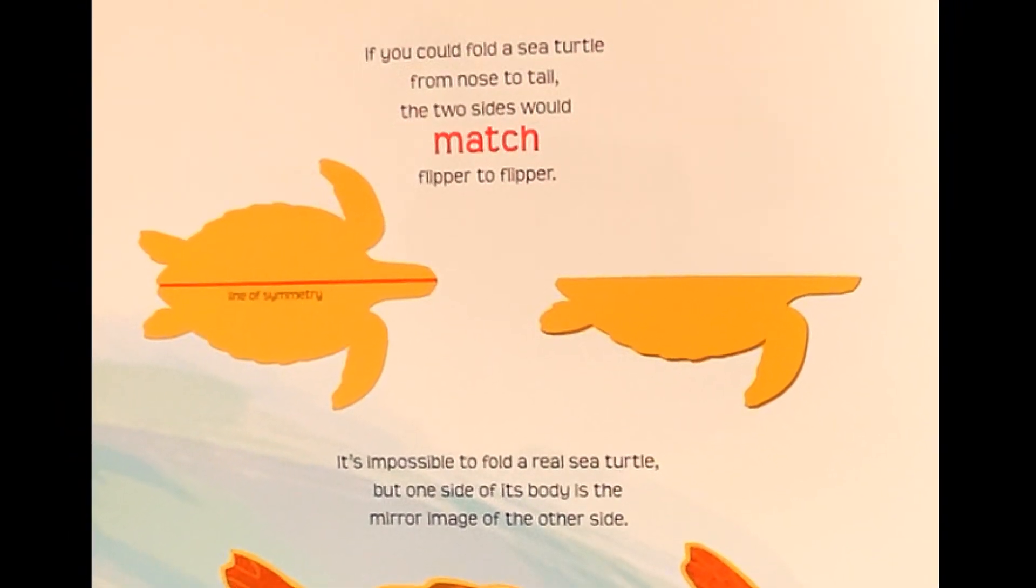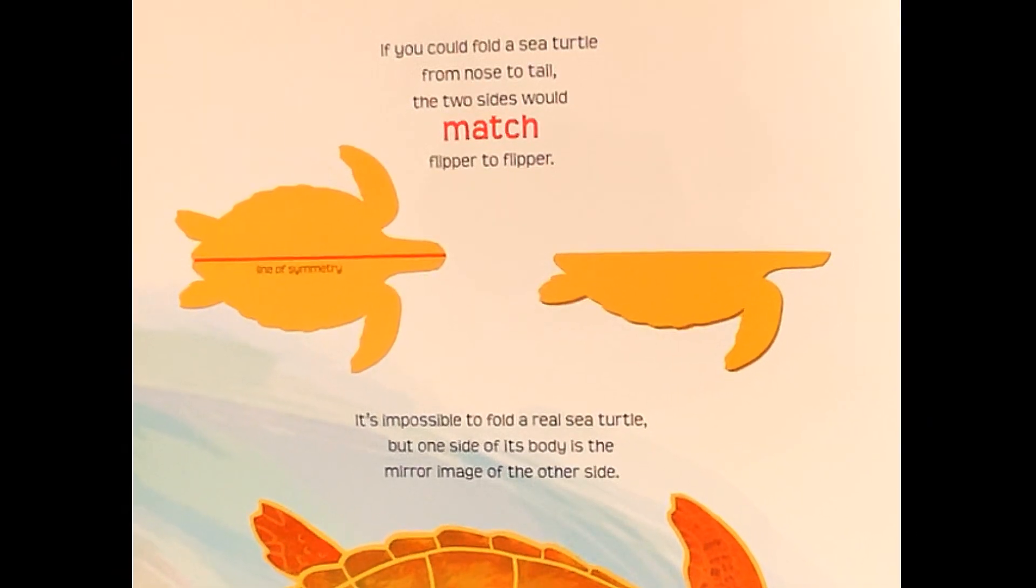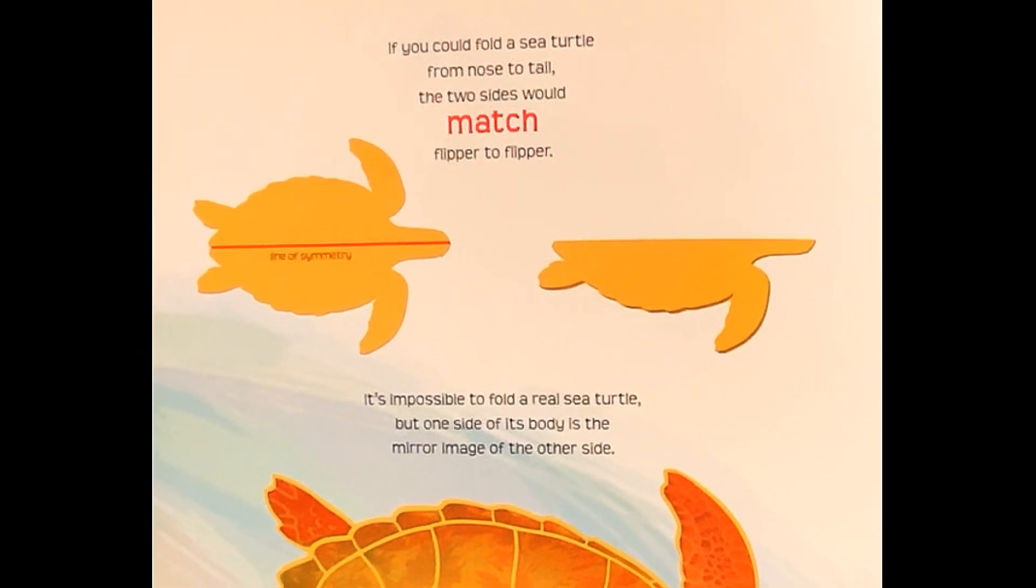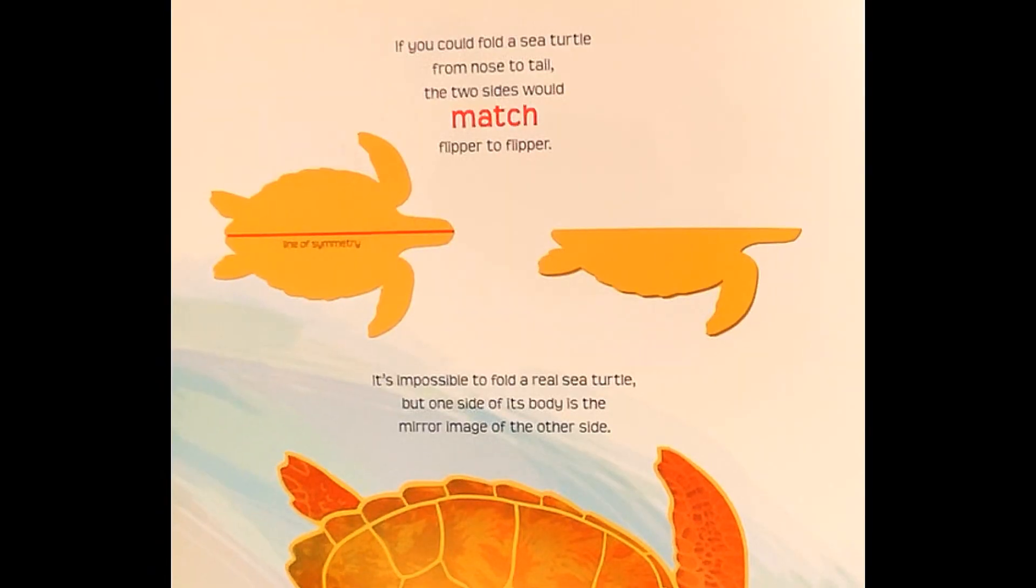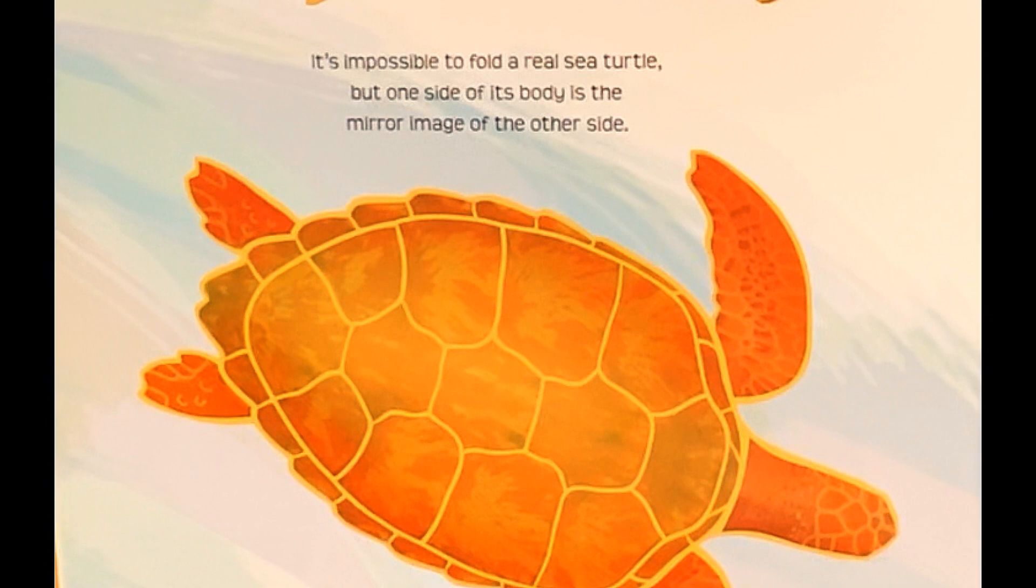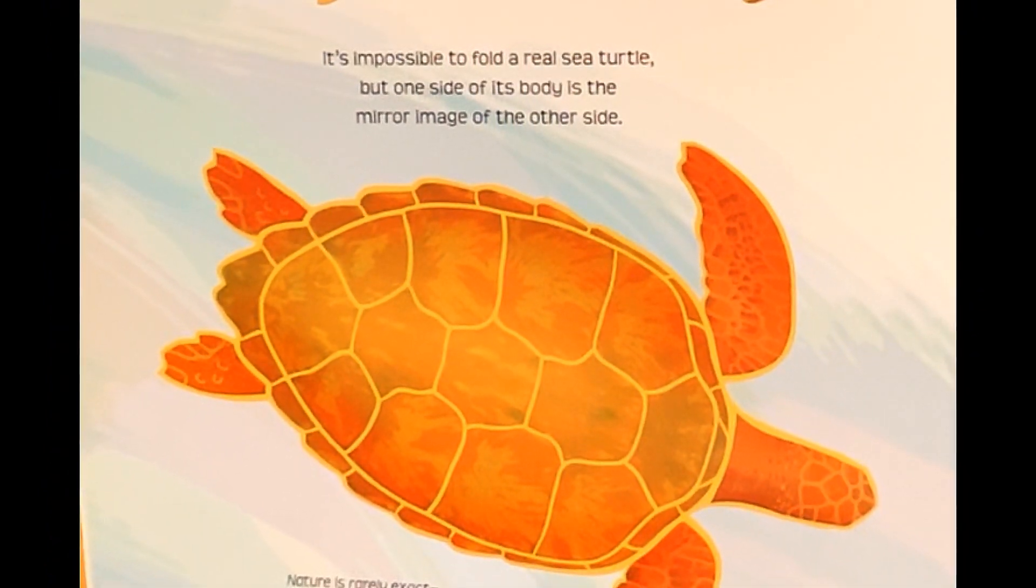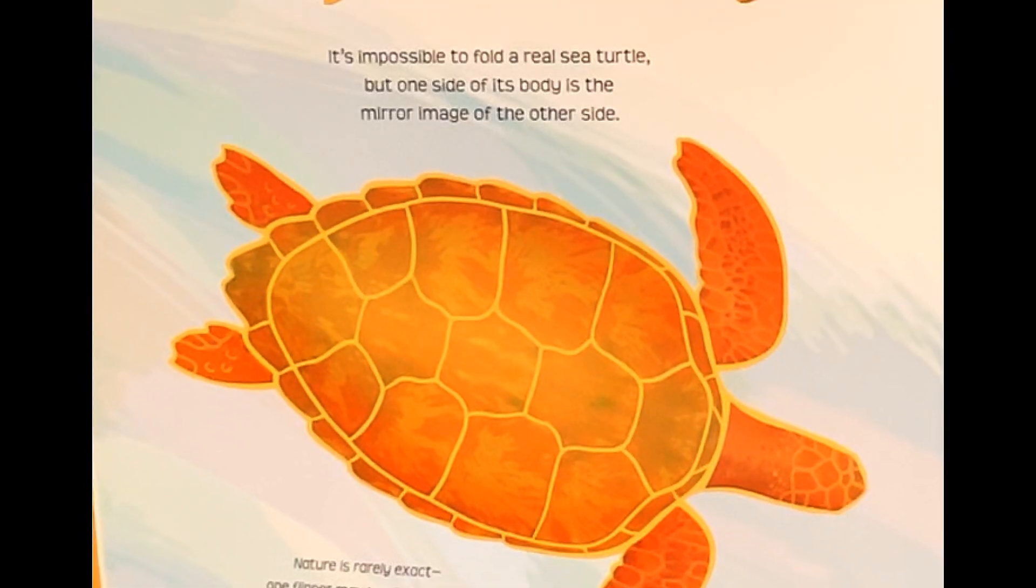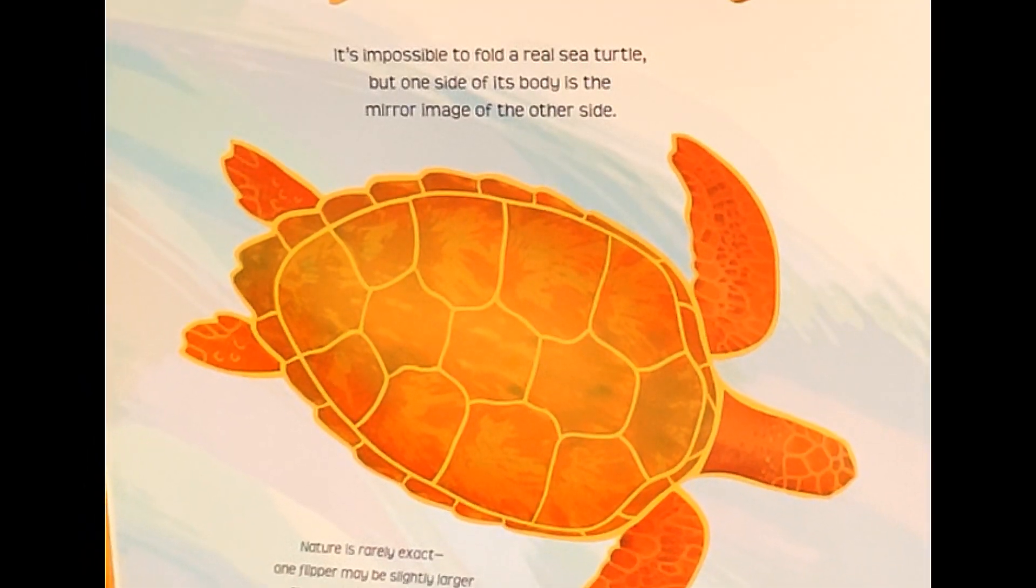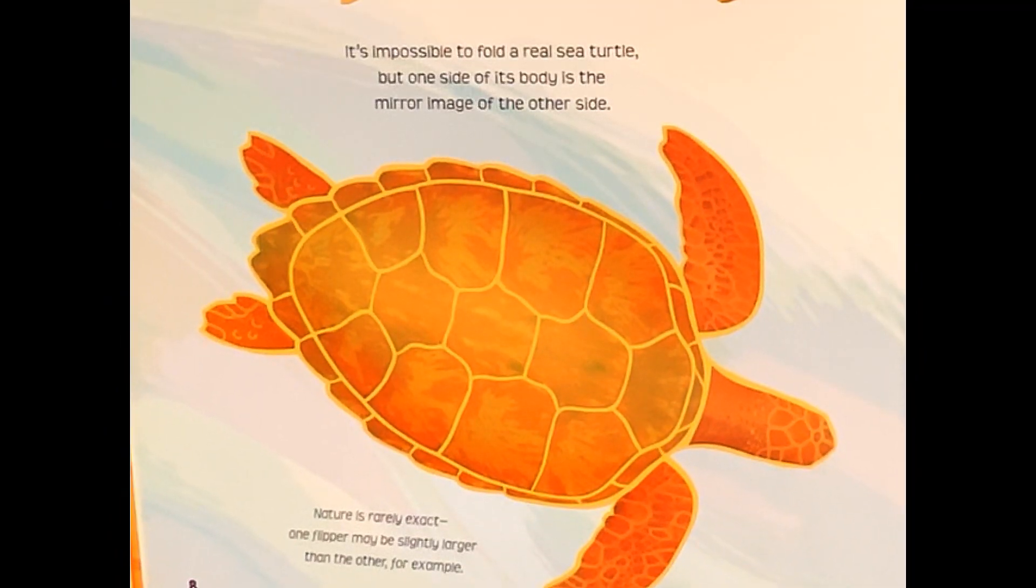If you could fold a sea turtle from nose to tail, the two sides would match, flipper to flipper. It's impossible to fold a real sea turtle, but one side of its body is the mirror image of the other side. Nature is rarely exact. One flipper may be slightly larger than the other, for example.